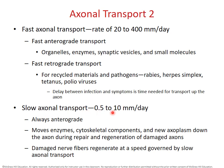Slow axonal transport can only move materials about a half to ten millimeters a day — ten millimeters is basically one one-hundredth of a meter, so very short distances per day, much slower. This kind of transport is always in the anterograde direction, and it moves things not quite so essential to traffic rapidly. So cytoskeletal elements to maintain the tubules, just basic housekeeping. And if an axon is damaged, this can transport materials used for replacement and repair of the damaged axon.